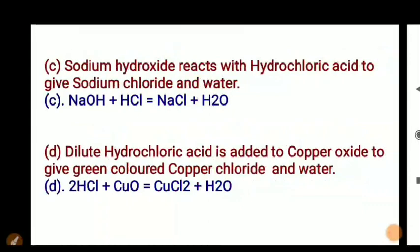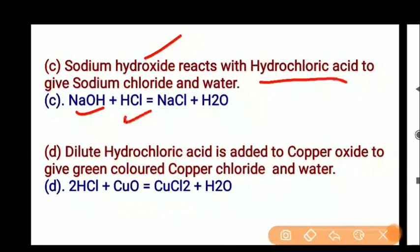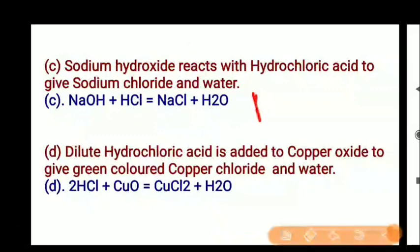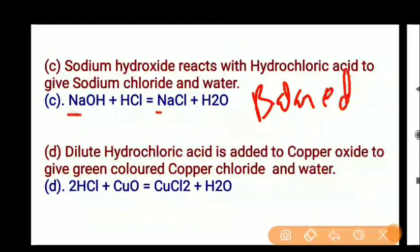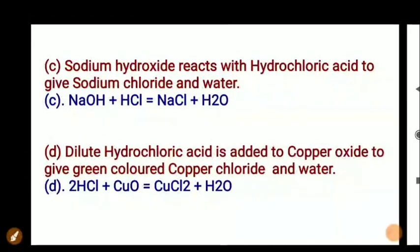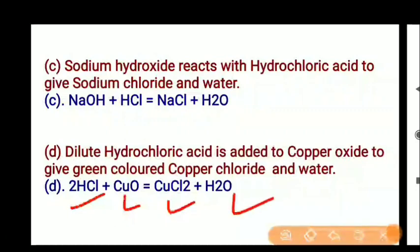Calcium oxide reacts with hydrochloric acid. The products are sodium chloride NaCl — this is salt — and water. HCl is an acid reacting with a base to form salt and water. The hydrogen and chlorine atoms are already balanced, so this is already a balanced equation. Next, dilute hydrochloric acid is added to copper oxide: HCl plus CuO gives copper chloride plus water. The balanced equation is 2HCl plus CuO gives CuCl2 plus H2O.